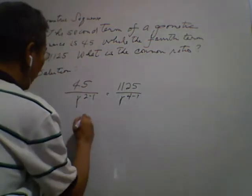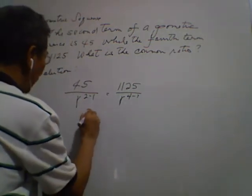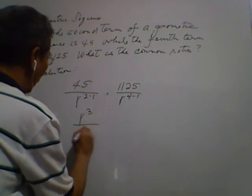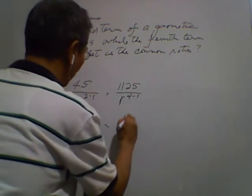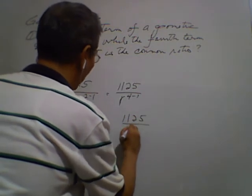So we have here r sub 3 over r is equal to 1125 over 45.